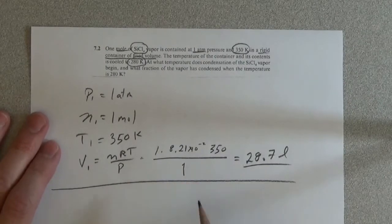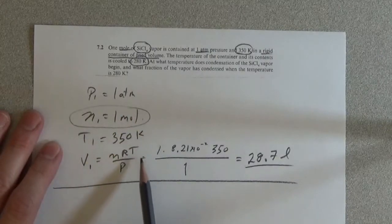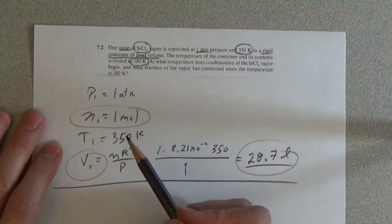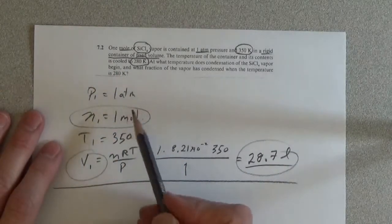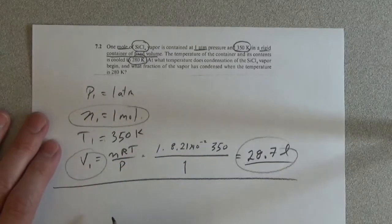For this, the number of moles is held constant, the volume is held constant because we have a rigid container with fixed walls. The temperature is going to change, and with that, the pressure changes.